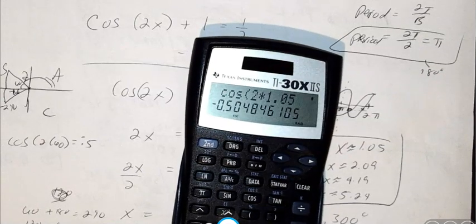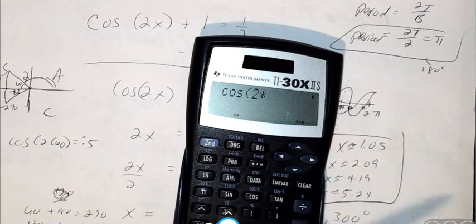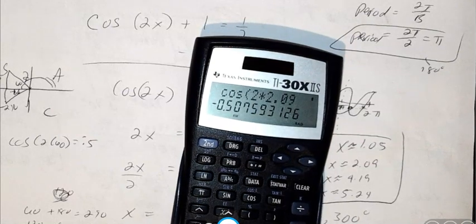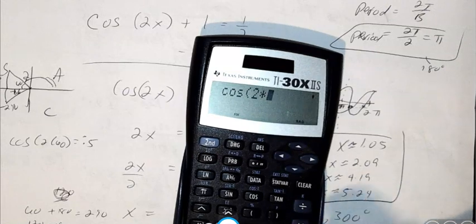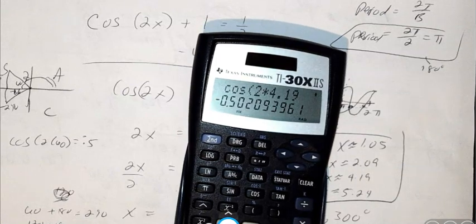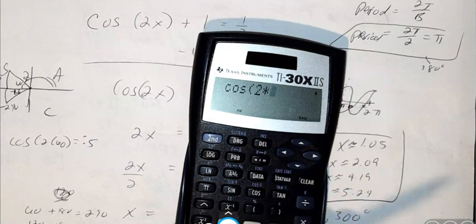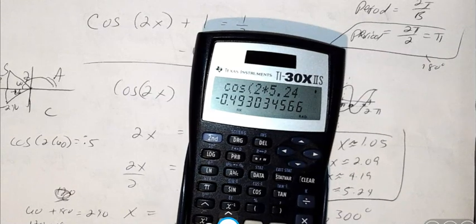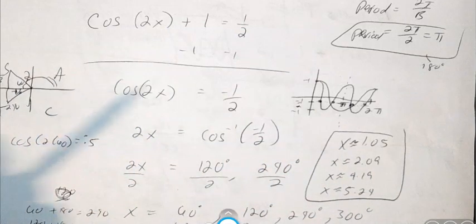And if I plug in cosine of 2 times 2.09, that's about the same thing, about negative 0.5. And then cosine of 2 times 4.19, that's about negative 0.5. And cosine of 2 times 5.24, still negative, about negative 0.5. We could have gotten more accurate if we used more decimal places. But our directions said go out to the hundredths place, so we did.